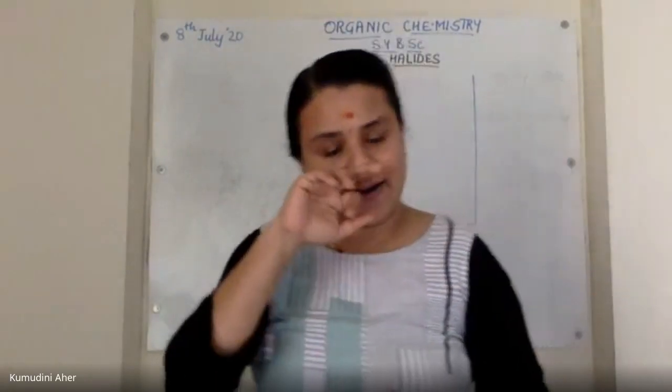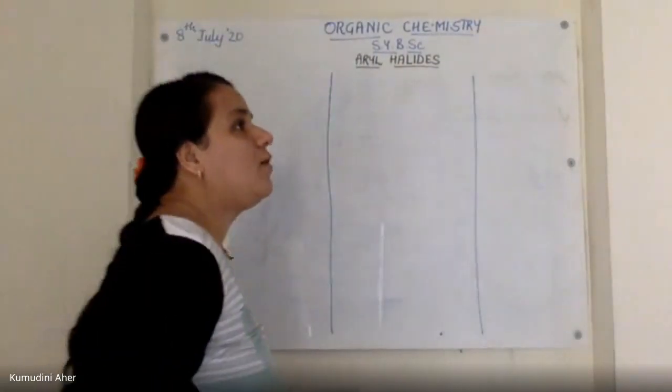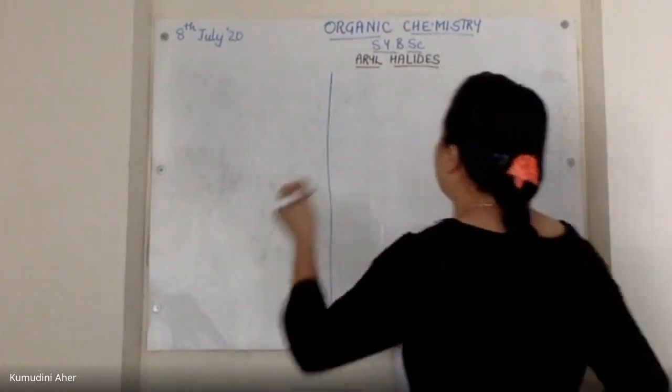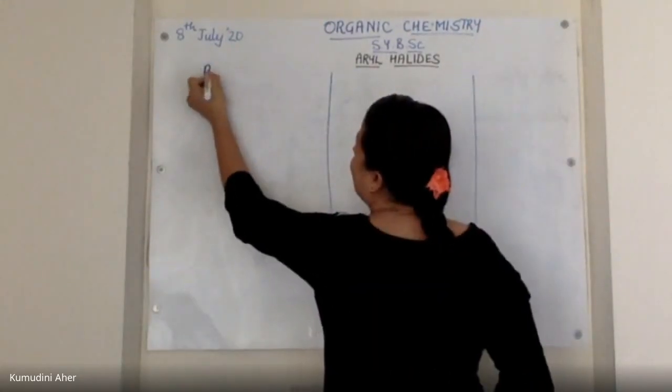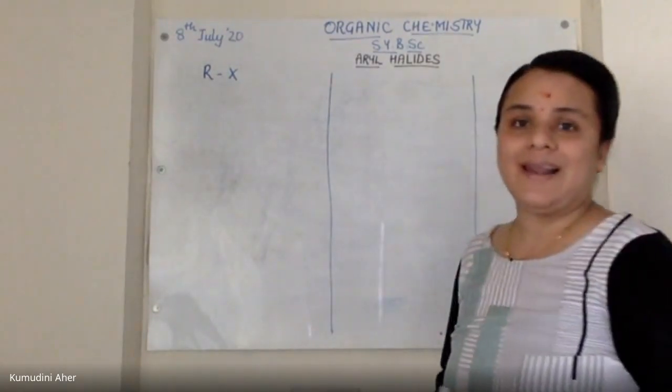Okay, so now let us start with today's lecture. In the last chapter, we had seen about alkyl halides. Alkyl halides' general formula I have taught. We call it R-X, where R stands for your alkyl group.